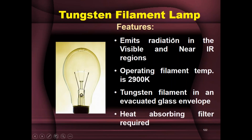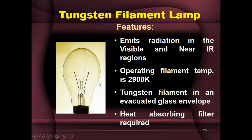We'll continue with discussing each of these sources in detail, starting with the tungsten filament lamp. There are different types of sources in UV-visible instruments: some useful for only visible radiation, some which are pure UV sources, and others which are combination sources giving both UV and visible radiation. The tungsten filament lamp is used for visible radiation — it's nothing but a normal household bulb with a tungsten filament that glows when electrically heated.